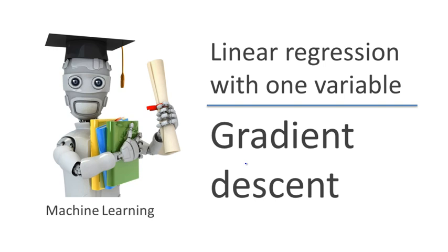We previously defined the cost function j. In this video, I want to tell you about an algorithm called gradient descent for minimizing the cost function j. It turns out gradient descent is a more general algorithm and is used not only in linear regression — it's actually used all over the place in machine learning. Later in the class, we'll use gradient descent to minimize other functions as well, not just the cost function j for linear regression.